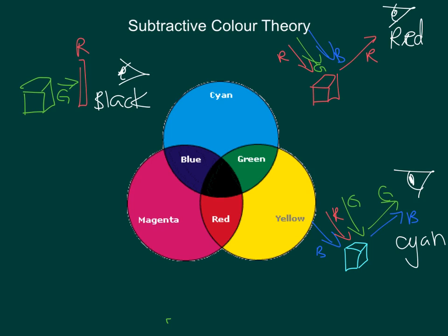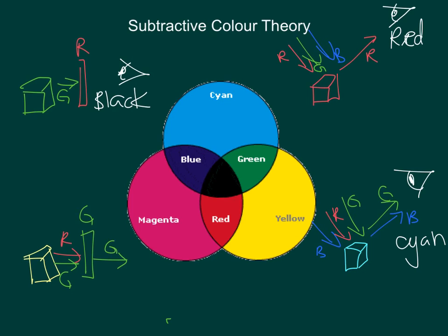On the other hand, what if I had a yellow object? Yellow is made up of green and red, so red and green are going to get through. And let's say it goes through a green filter — then only green light is going to pass through. So I will see the object as green.